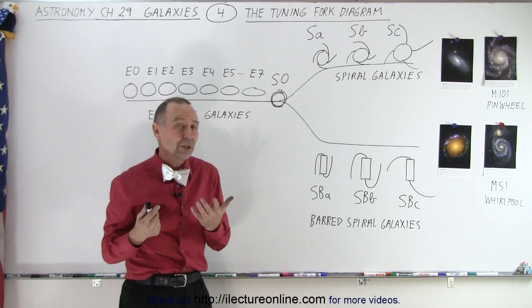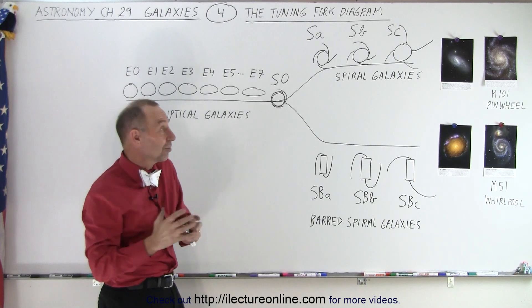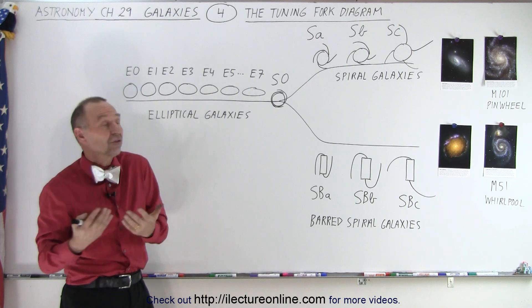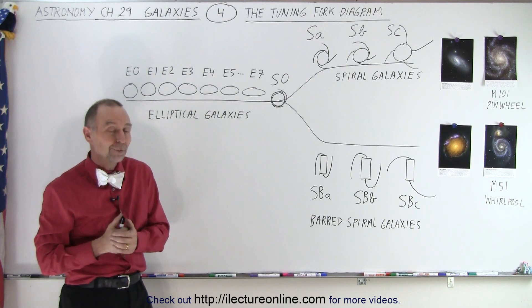So by being able to classify galaxies according to the tuning fork, we can talk to one another and say hey, take a look at that galaxy, that's an SC or that's an SBA or something like that, and immediately the other person knows what the shape of that galaxy will be. That's the beauty of the methodology used in the tuning fork: it now becomes very easy to imagine what the galaxy looks like simply by mentioning where it belongs on the tuning fork.